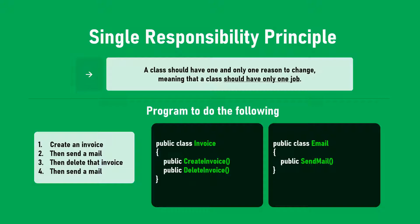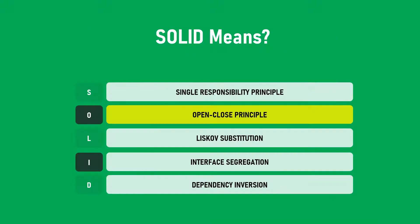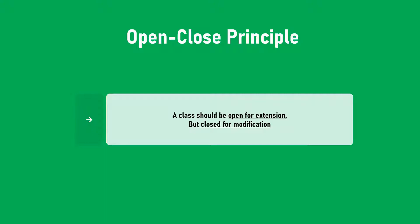If you look at the Single Responsibility Principle again, this satisfies it: a class should have one and only one reason to change, meaning a class should have only one job. The Invoice class's only job is to manage invoices; the Email class only manages email.